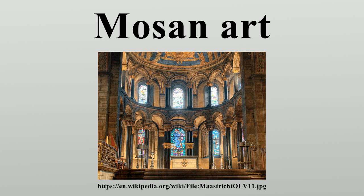Mosan art contains strong classical elements, which separates it from the international Romanesque style seen elsewhere during the period, for example in France, Germany, England, and Italy. However, it shares with mainstream Romanesque art elements such as the treatment of space. Although the iconography of 11th and 12th century Meuse Valley art largely draws on biblical inspiration, some elaborately carved capitals in the two main churches in Maastricht depict scenes from daily life, as well as images from an intriguing world of fantasy.